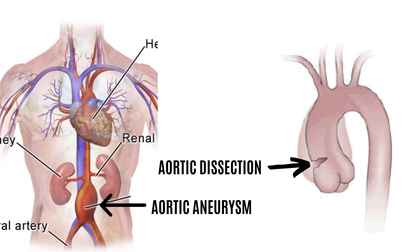The aortic lumen may narrow as a result of blood entering the wall, decreasing blood flow to the rest of the body. Additionally, it can make the wall weaker and enlarge even more, which might result in an aortic aneurysm, which we will discuss next.